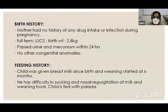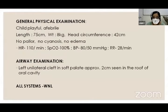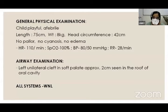Feeding history: the child was given breast milk since birth and weaning started at six months. He had difficulty in sucking and nasal regurgitation of milk and weaning food; the child is fed with palida. Immunization history: child was immunized for age. Developmental milestones: child can stand with support, immature pincer grasp, waves bye-bye, and utters mama. On general physical examination, the child was playful. Length was 75 cm, weight 8 kg, head circumference 42 cm. No pallor, no sinuses, no edema. Vital signs: heart rate 110/min, SpO2 100% on room air, BP 80/50 mmHg, respiratory rate 28/min. Airway examination revealed a left unilateral cleft in the soft palate of approximately 2 cm seen in the roof of the oral cavity. All systemic examinations were within normal limits.